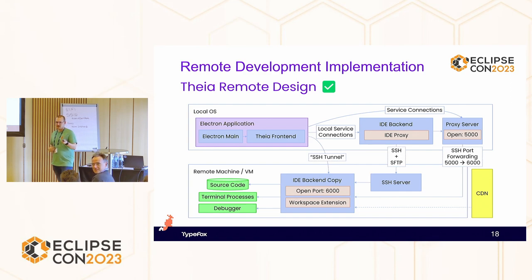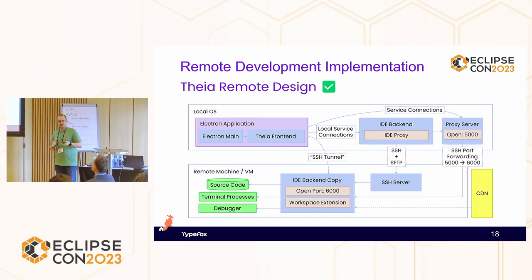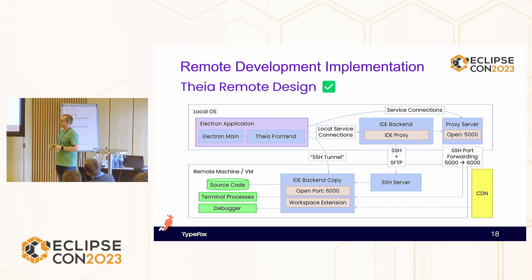Q: What are the requirements on the remote machine to run this? A: The IDE backend downloads a copy of Node.js onto the remote machine in case it's not available, so it definitely has a Node version to actually start the backend, since it's all JavaScript. Everything else is basically what Theia needs itself to run — you need a somewhat current version of Ubuntu or Mac or whatever. It supports Ubuntu 20.04, but that comes down to what native dependencies we actually download. Generally, everything that can run Theia can also run the Theia backend copy.